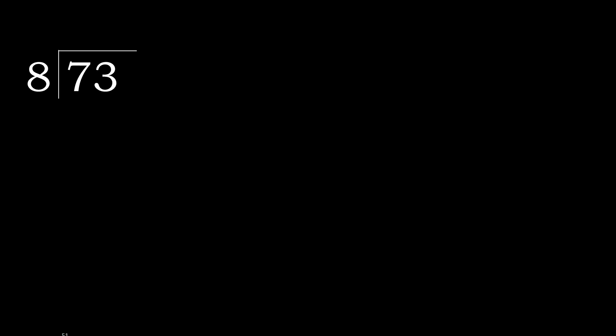73 divided by 8. 7 is less, therefore next. 73 is not less, therefore with 73 — 8 multiplied by which number is nearest to 73 but not greater? 8 multiplied by 9 is 72.